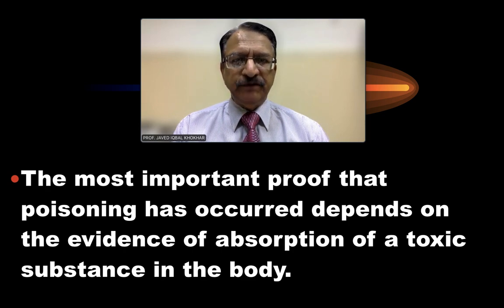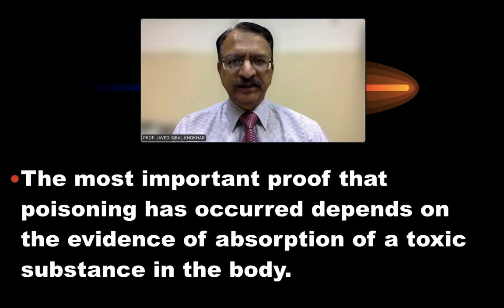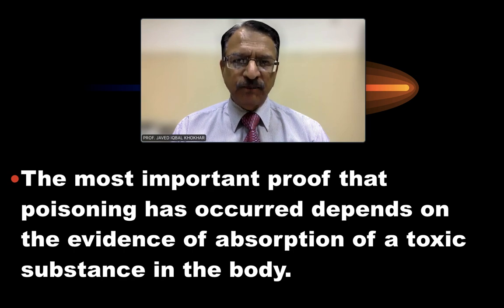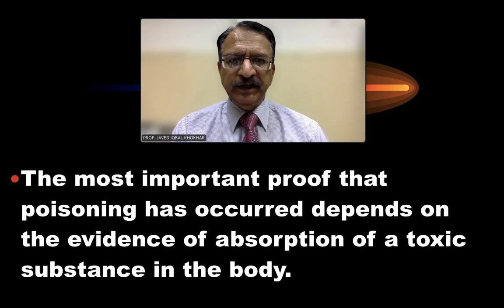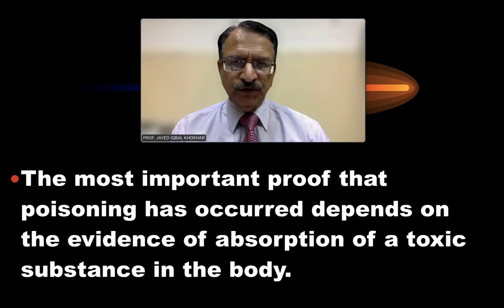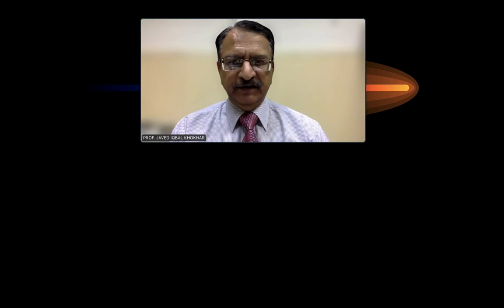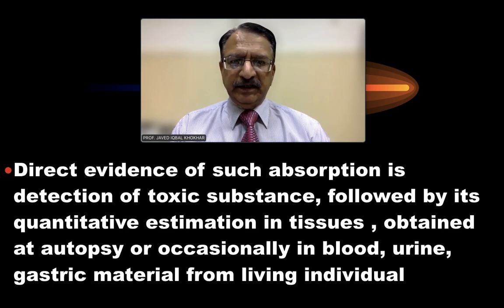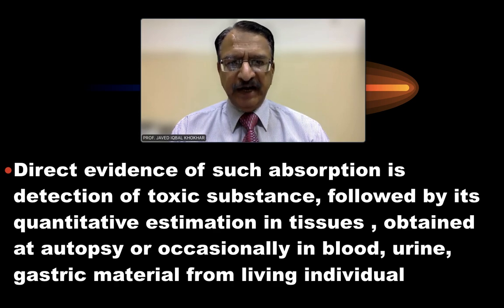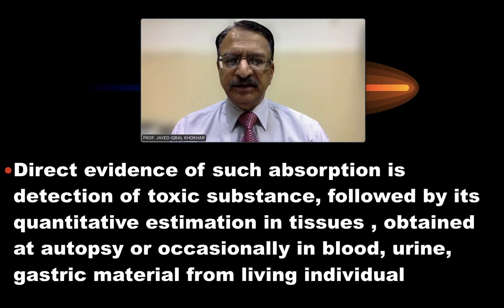That means we have to prove that this poison, drug, or chemical which is not a normal constituent of the human body is present within the body — it is detected in the blood and tissues, and the level of its presence is up to the toxic level. The direct evidence of such absorption is the detection of that toxic substance followed by quantitative estimation from the tissue.